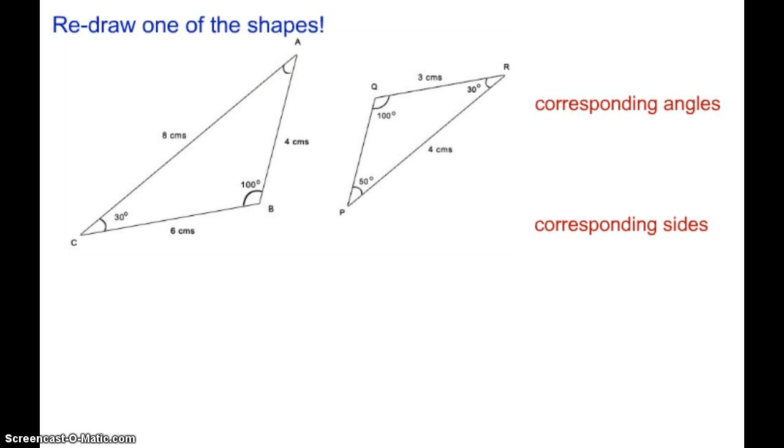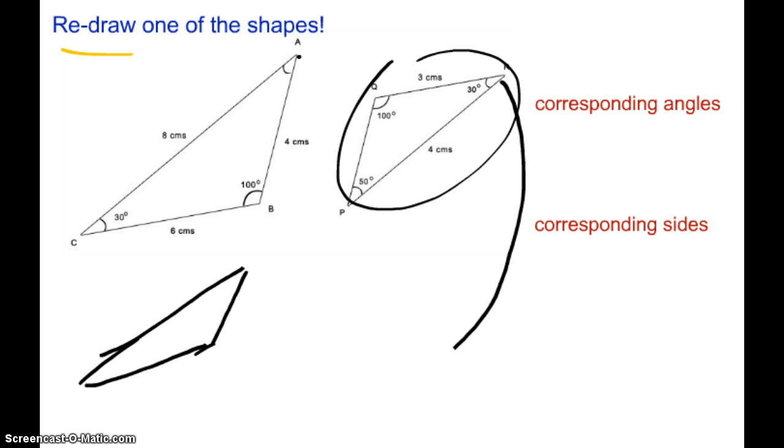So what do I mean by that? Well, here are the shapes again. I want to redraw just one of those shapes. So I'm going to leave this large shape here and I'm going to take the small shape and I'm going to redraw it. So basically I'm just going to draw this big shape again, but I'm just going to draw another one right underneath it. So what I have done is I have taken the shape and I have actually turned it this way.